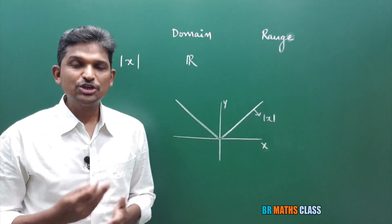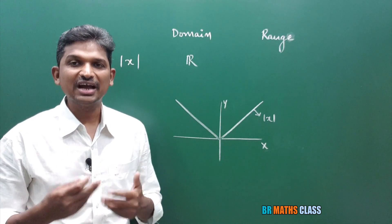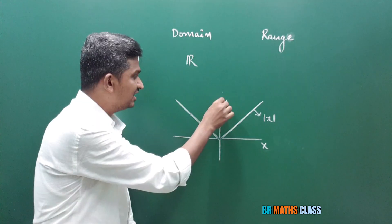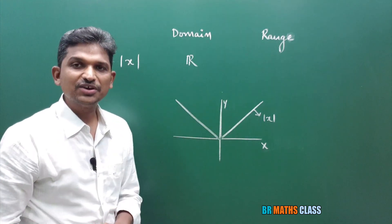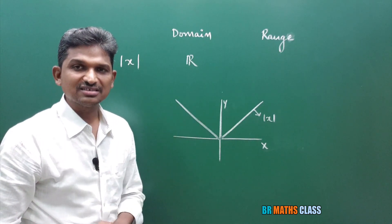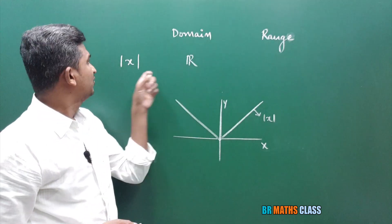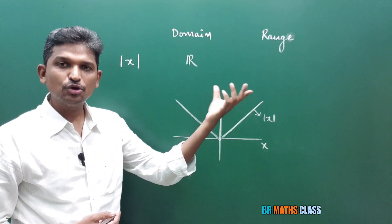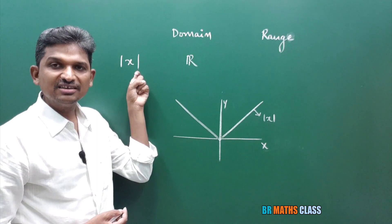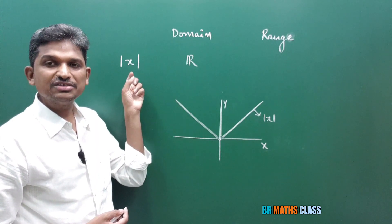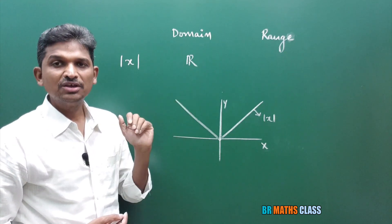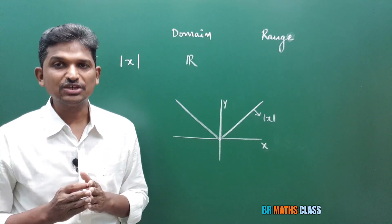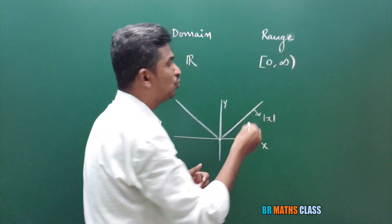For range, we observe the y-axis — what values the function gives. This graph is in the first and second quadrant only, not in the third or fourth quadrant, meaning it is on the positive y-axis only. When x = 0, |0| = 0; |−3| = 3; |1/2| = 1/2. So the range of the modulus function is all non-negative real numbers, i.e., [0, ∞).